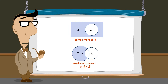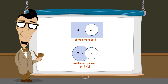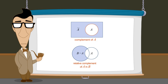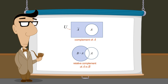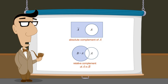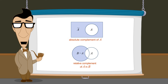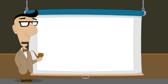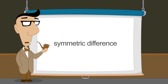So the complement and relative complement operations are actually quite similar. The only difference is that in the complement operation, set A must always be completely contained in the other set, which we call the universal set, whereas the relative complement operation does not require the other set to contain A. The complement operation is sometimes called the absolute complement so as not to be confused with the relative complement. We now have several operations which create new sets by combining sets in various ways. In the next lecture, we will introduce one additional set operation called the symmetric difference.